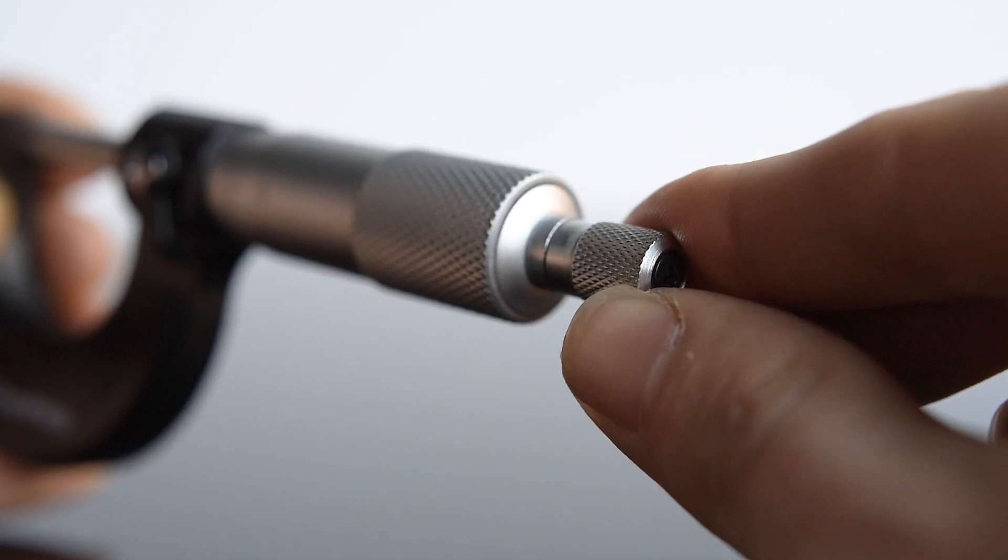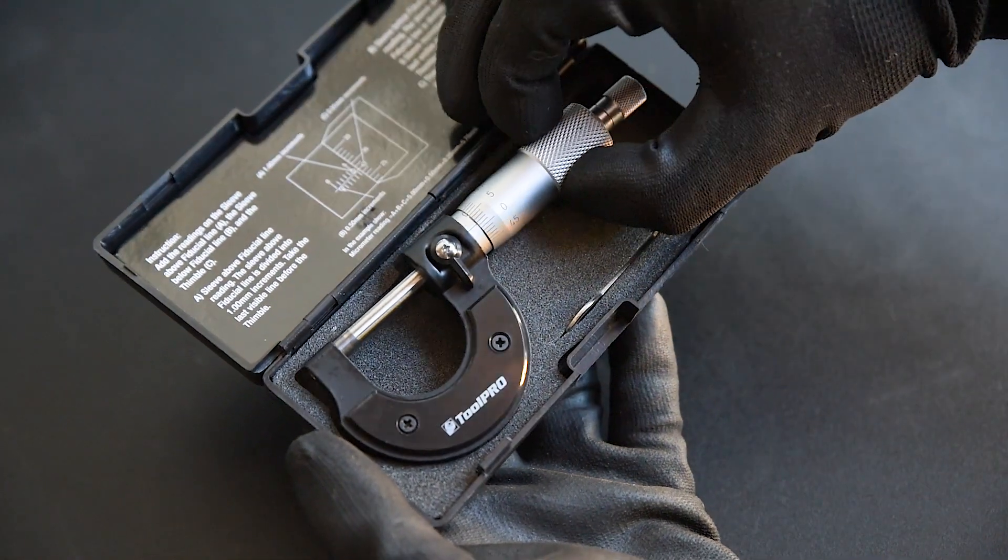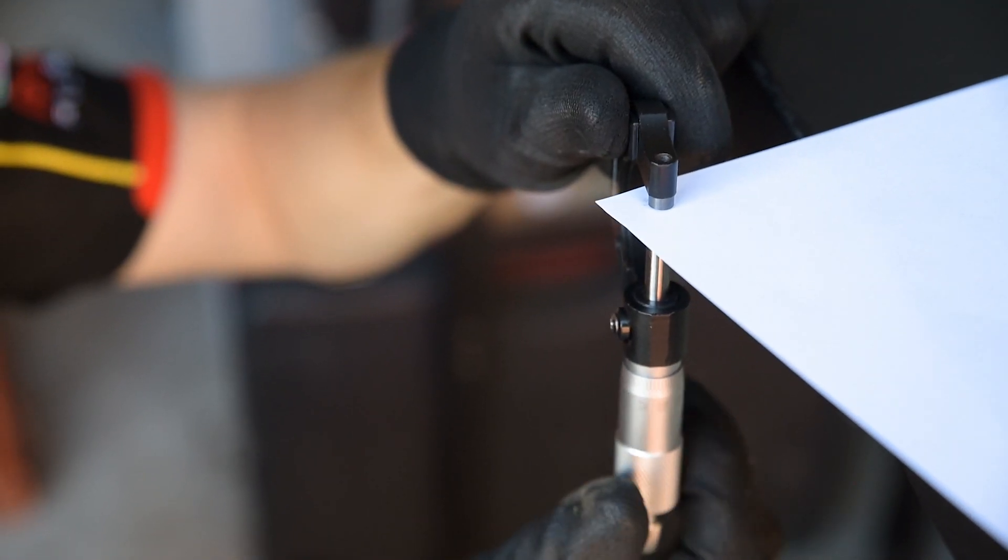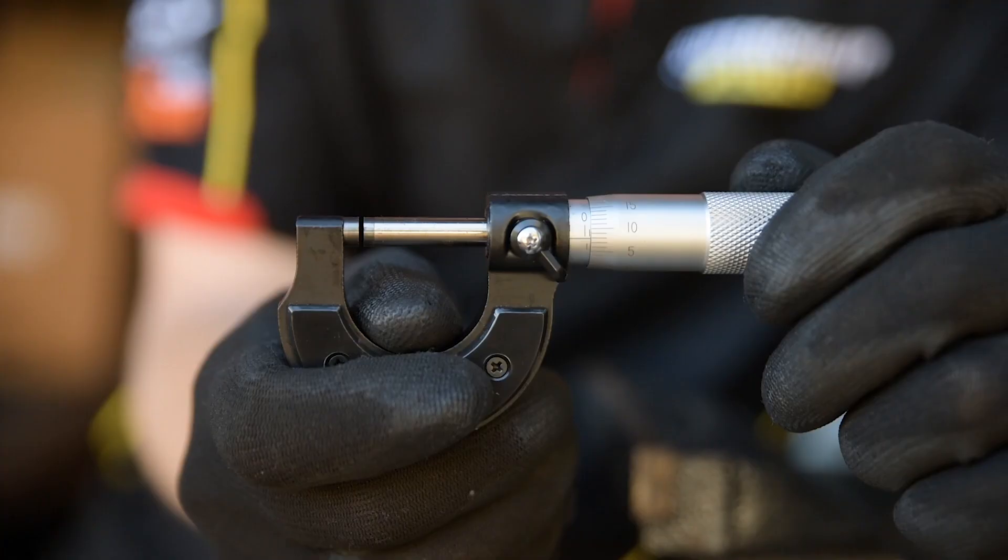On the end is a ratchet, and a locking lever sits on the side of the frame. Before taking a measurement, it's important to clean the measuring faces. Gently close the micrometer on a clean piece of paper, then slowly pull it out.